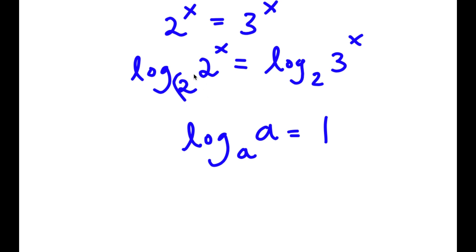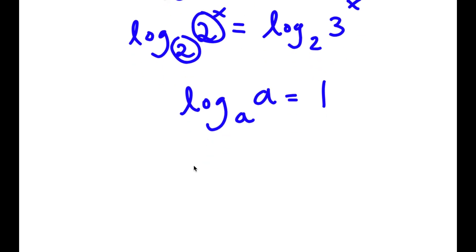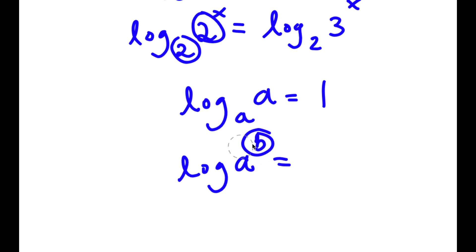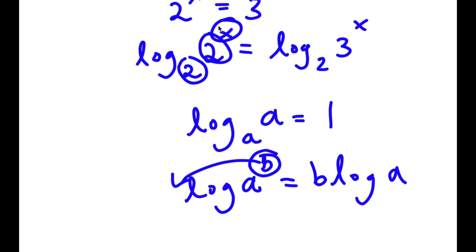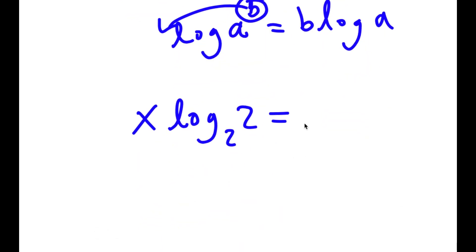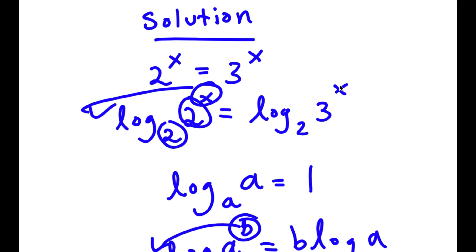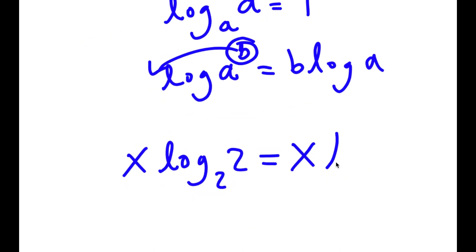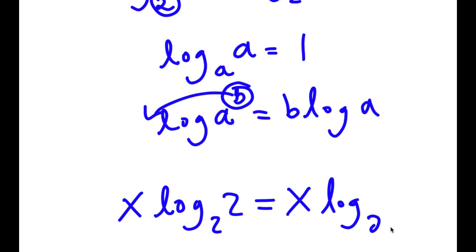As you see here, we have log base 2 of 2. But before I cancel those out, if I have something in the form log base a of something to the power of b, I can move the exponent b to the front — so it equals b times log a. In this case, x is my exponent, so I move it to the front: x times log base 2 of 2 equals x times log base 2 of 3.